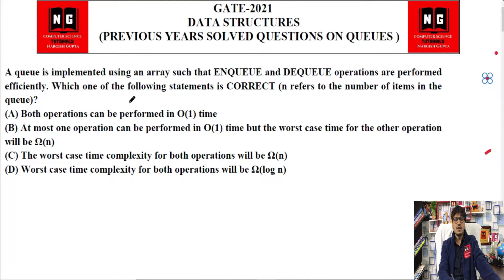So the first question is: a queue is implemented using an array such that enqueue and dequeue operations are performed efficiently. Enqueue or dequeue operations efficiently perform karne hai. Which one of the following statements is correct, where N refers to the number of items in the queue? So we will explain that enqueue and dequeue operations efficiently perform karne hai. Which statement will be correct?